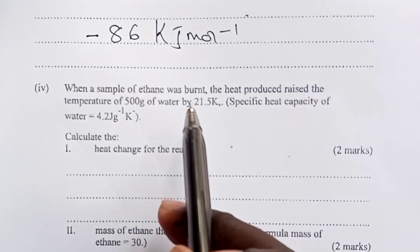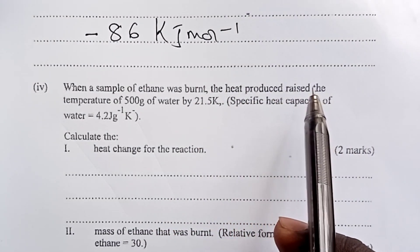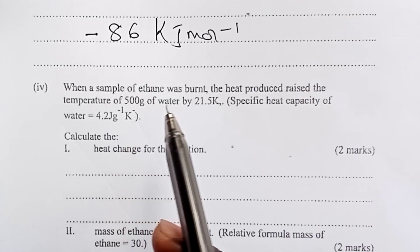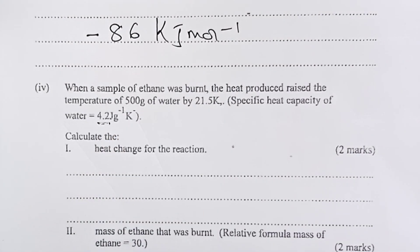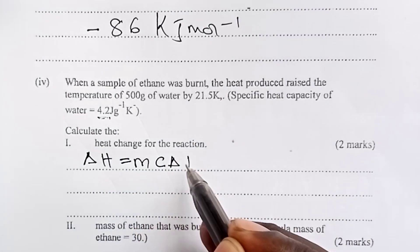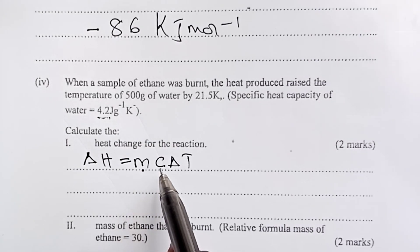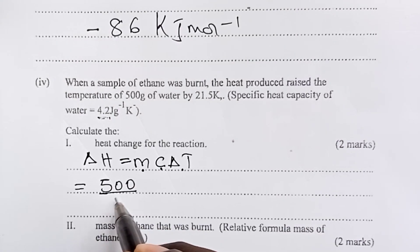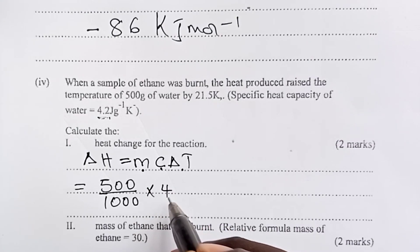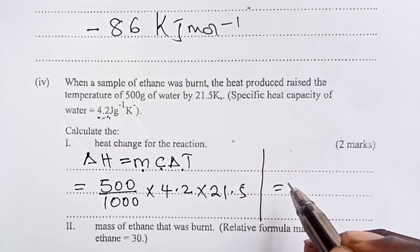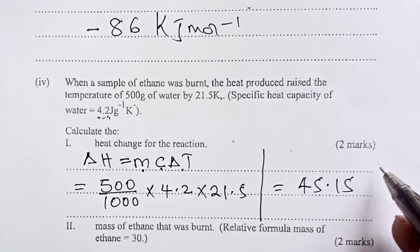So moving on, when a sample of ethane was burnt, the heat produced raised the temperature of 500 grams of water by 21.5 Kelvin. Specific heat capacity of water is given as 4.2 joules per gram per Kelvin. And then now we are being asked to calculate the heat change for this reaction. Now, delta H for heat change is normally given by MC delta T. Where this is mass in kilogram. This is specific heat capacity of water. And this is the change in temperature. So for our case, mass will be 500. We have to change in 2 kilograms by dividing by 1000. We shall multiply by 4.2 given here. And then our change in temperature is 21.5. This gives me 45.15 kilojoules.